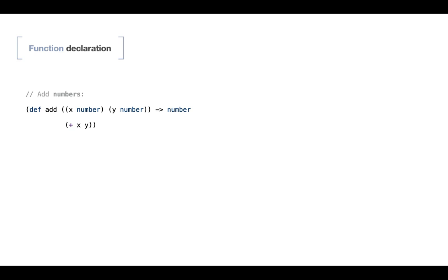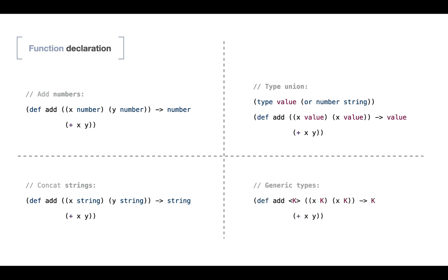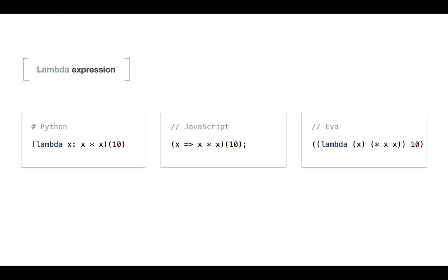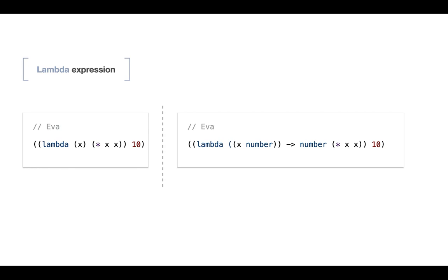For example, we have the function 'add' which adds numbers, but you may also reuse the same function for string concatenation. One solution is the union type — defining a new type which is either number or string. Or you may define a generic function parameterized by type k, where we don't know the actual type until the function call. For functional programming we're going to support lambda functions — anonymous function expressions — and immediately invoked lambda expressions, where we define a lambda and directly apply it to some arguments. The typed version of these expressions includes type annotations.